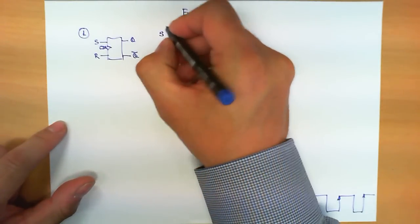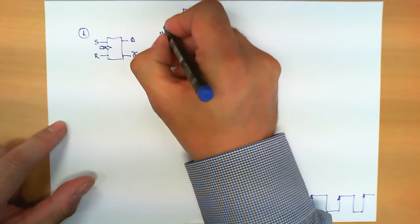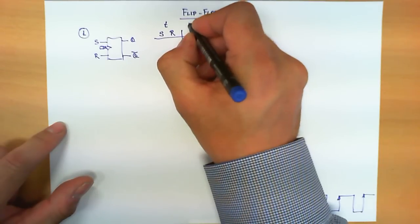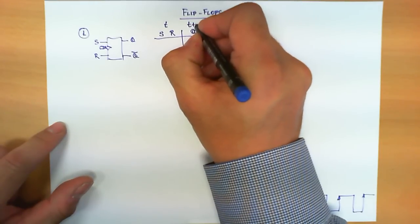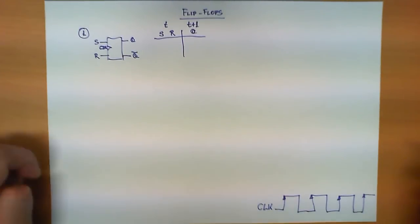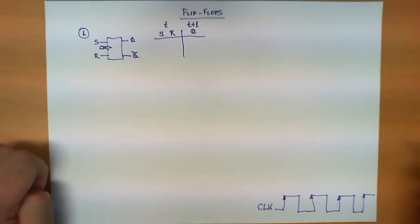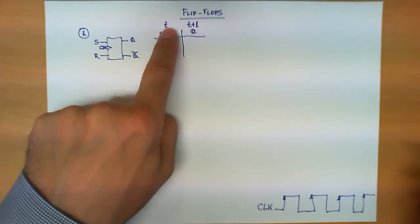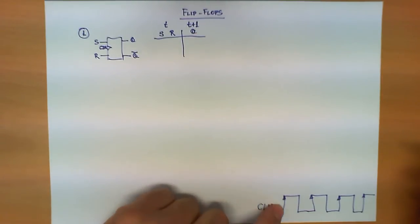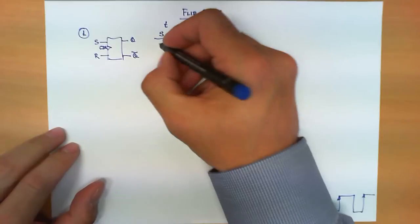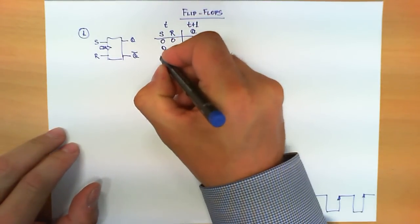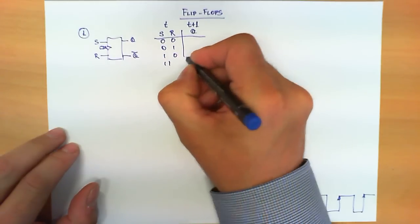We have the values of S and R at time t and we want to know what is the value of Q at time t plus 1. We do not write the value of Q-bar because it is the opposite of Q. This transition from t to t plus 1 takes place when the clock has one of these rising edges. We have four possible combinations: 0-0, 0-1, 1-0, and 1-1.